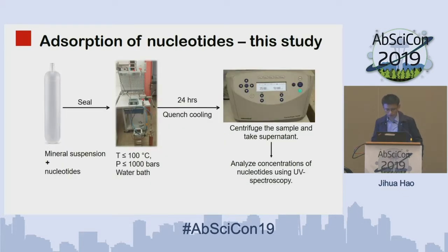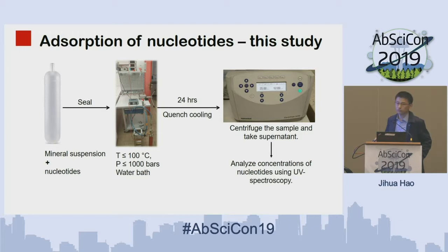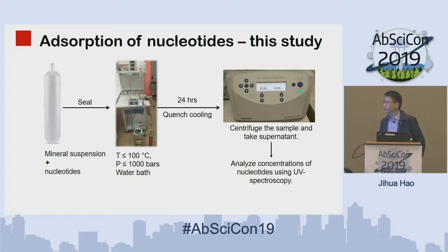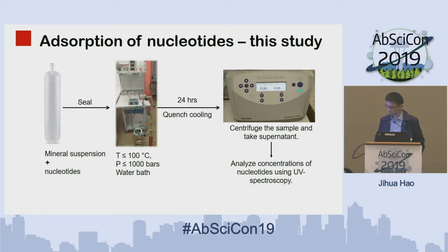We recently conducted some experiments to study the absorption of nucleotides onto nontronite. We mixed some mineral suspension and nucleotide solution and put it into a special tube which can endure up to 100°C and 1,000 bars. We sealed it and put it into the reactor, using water to increase temperature and pressure to target values. After 24 hours, assuming equilibrium, we quench-cooled the system, centrifuged the sample, and analyzed the supernatant using UV spectroscopy to get the concentration of nucleotides after absorption.